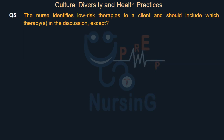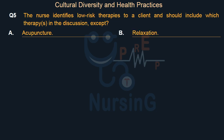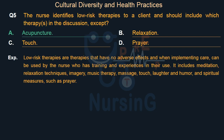The nurse identifies low-risk therapies to discuss with a client — which of the following should be included, EXCEPT? Option A: Acupuncture. Option B: Relaxation. Option C: Touch. Option D: Prayer. The right answer is Option A — Acupuncture. Low-risk therapies are therapies that have no adverse effects and can be used by a nurse with training and experience. They include meditation, relaxation techniques, imagery, music therapy, massage, touch, laughter and humor, and spiritual measures such as prayer.